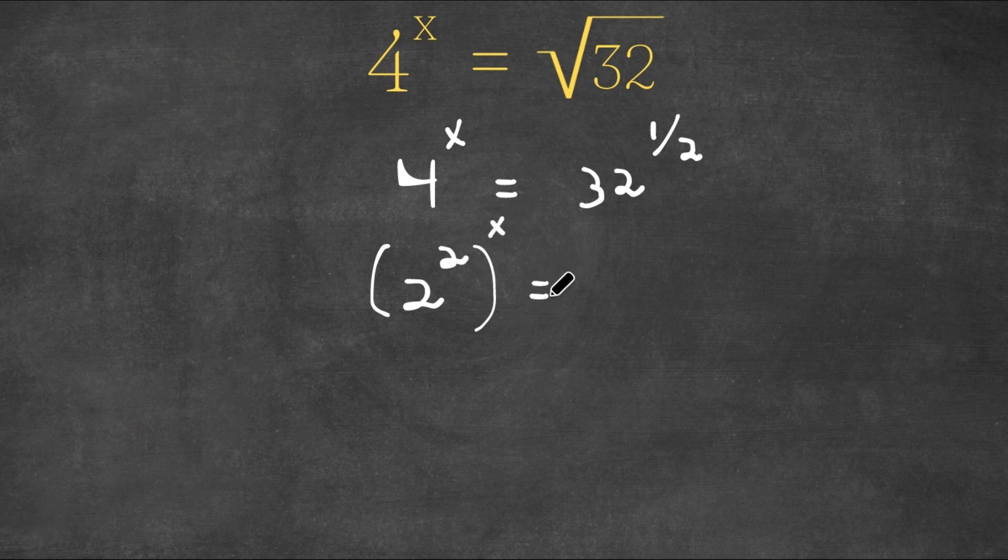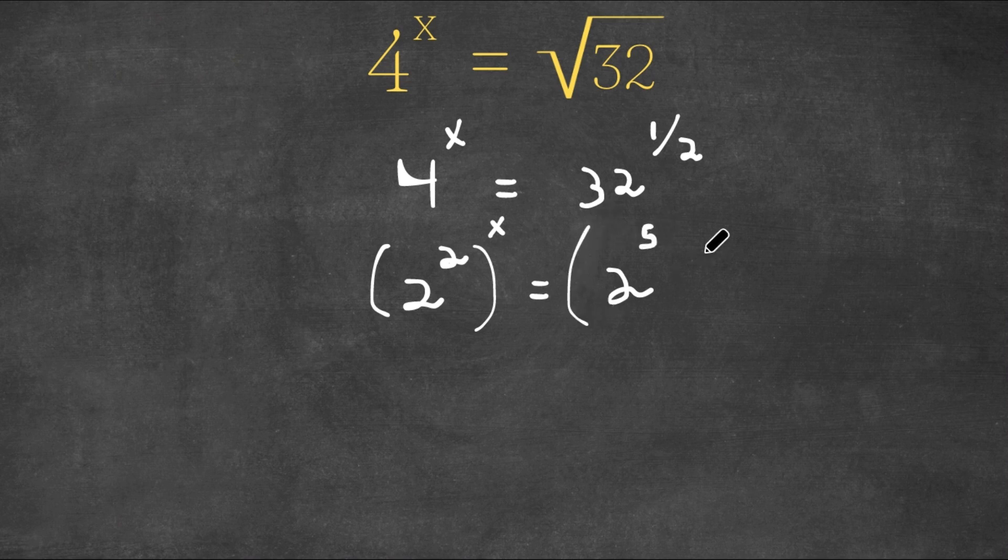And now this is equal to 32. Well, that's equal to 2 to the power of what? 2 to the power of 5. So now we have 2 to the power of 5 to the power of 1 half.